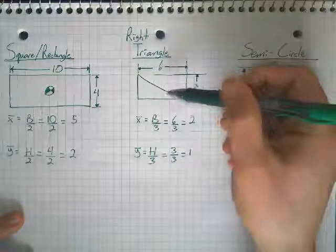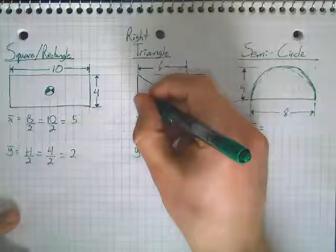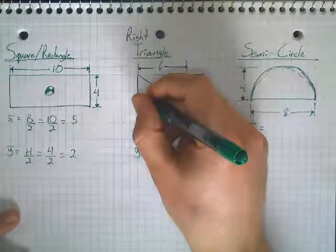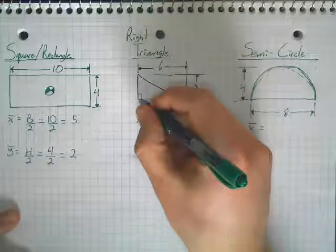Once again, with our right triangle, we always find the right angle. So, your zero, zero point, or wherever your centroid is located, always has to go from our right angle, which is right here on this one. So, that's my zero point.